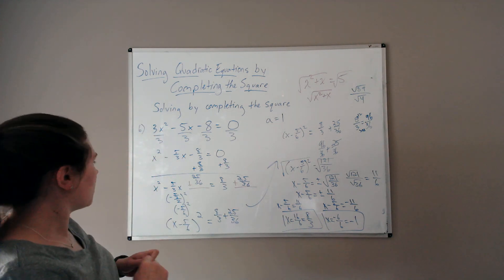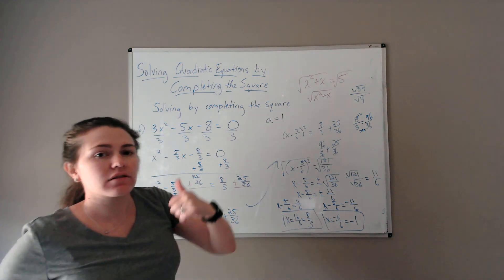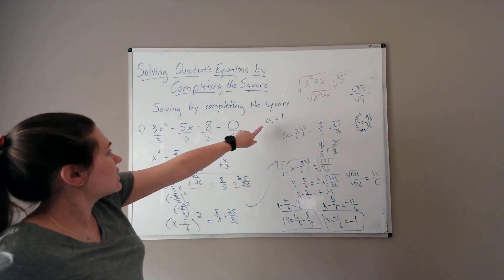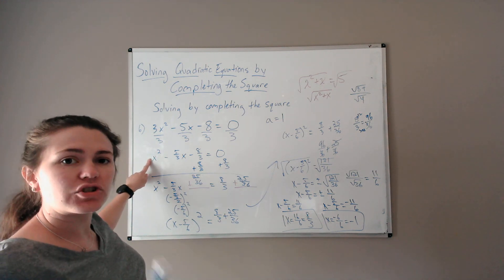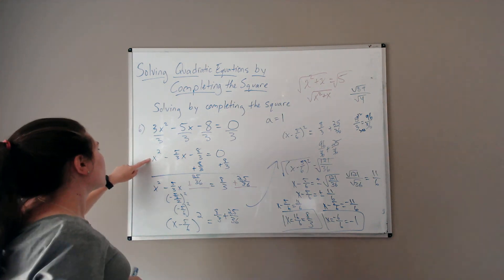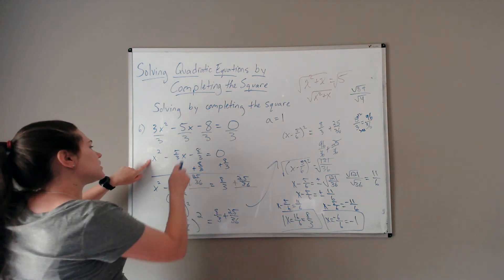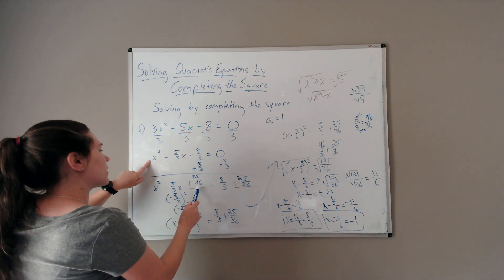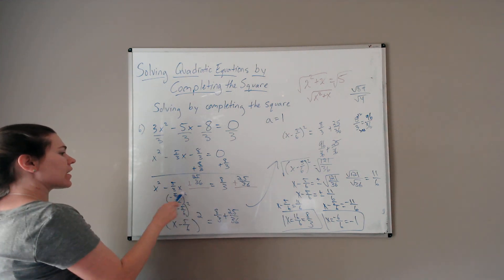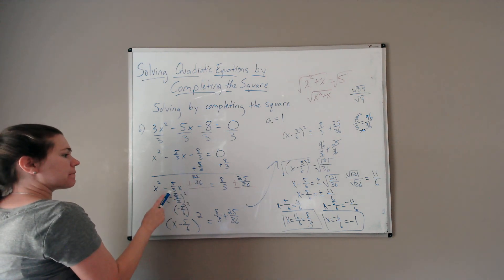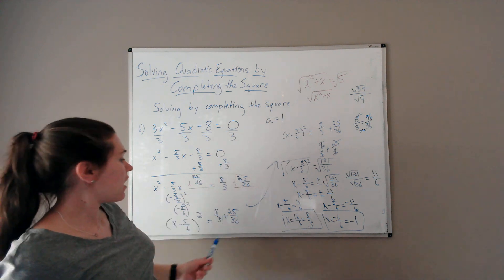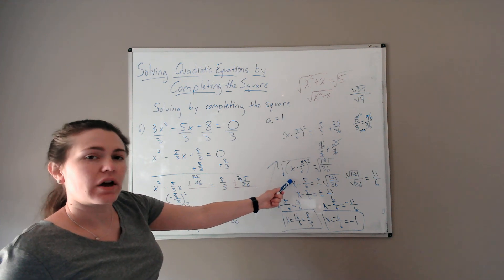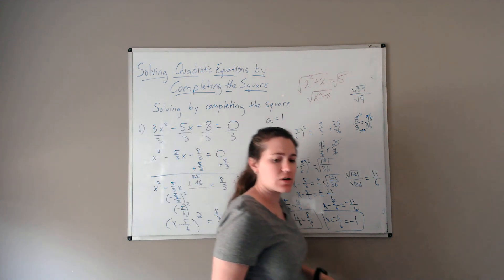To summarize completing the square: get the standard form of the quadratic — set equal to 0. Then a needs to be 1, so divide off the leading coefficient. Bring the constant term to the other side, then fill in the value that makes this the square of a binomial — it's always half of b squared. The number inside the binomial is always half of b. That allows you to take the square root and solve any quadratic equation.